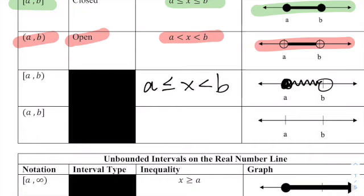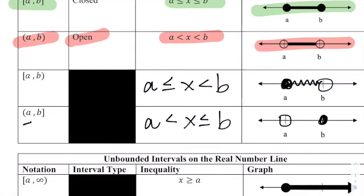If we have a parenthesis A to B with a bracket, that's going to be A is less than X, which is less than or equal to B, because we're including B. So that's an open circle for A and a closed circle for B, and all the values in between.